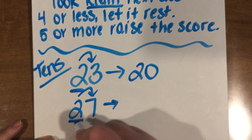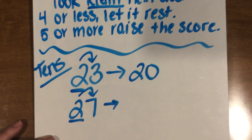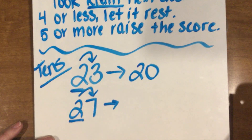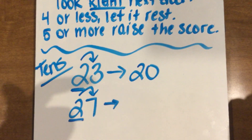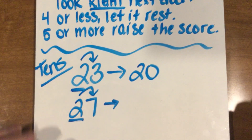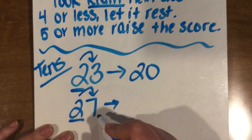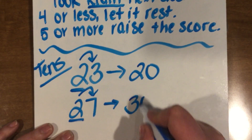So we're going to round that tens place to the next ten. So what ten comes after twenty? Let's think — ten, twenty, thirty. So we're going to round twenty-seven up to thirty.